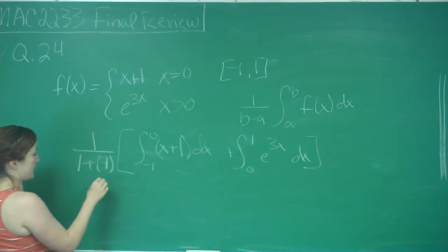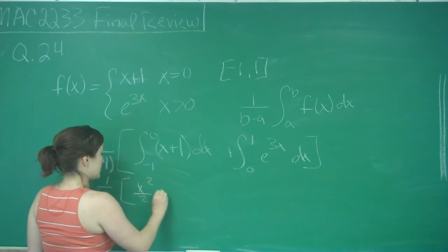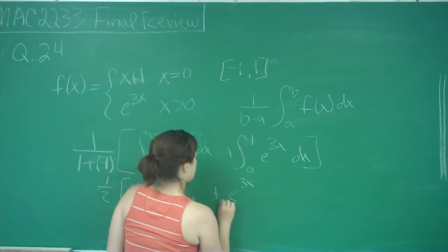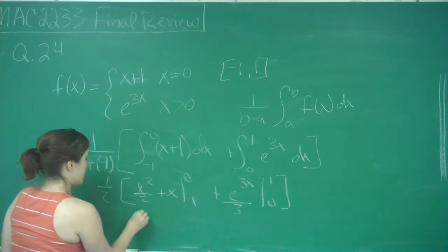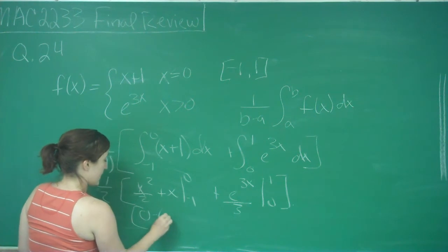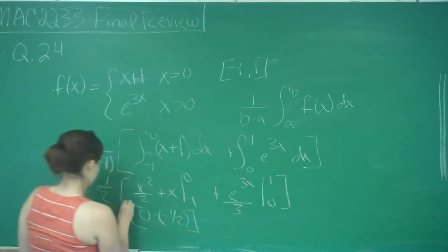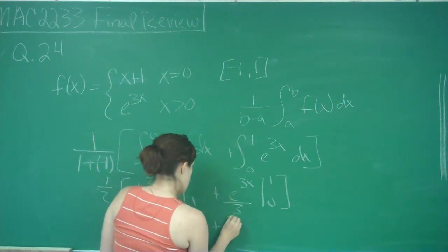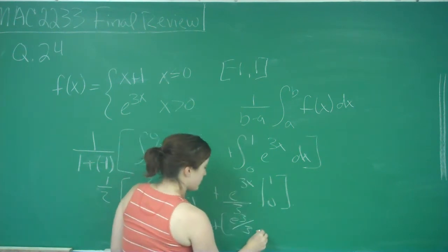So here I get one-half times: when I take the integral, I get x squared over 2 plus x from negative 1 to 0, plus e to the 3x divided by 3 from 0 to 1. When I plug in 0, I get 0, and then plugging in negative 1 gives 1 half minus 1, so that's negative 1 half. Then plus, when I plug in 1, I get e to the 3 over 3, and plugging in 0 gives e to the 0, which is 1, over 3, so that's 1 third.